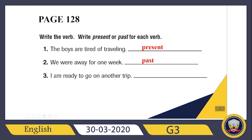What about the last sentence? I am ready to go on another trip. Which one is my verb? 'Am' is my verb. Am represents which tense? Am, is, are for present tense; was, were for past tense. If you see 'am', it represents present tense.